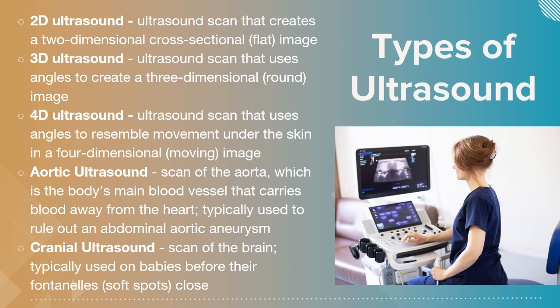These are the different types of ultrasounds that are available: 2D, 3D, and 4D, relating to the dimensions of what you see in your scan. A 2D ultrasound creates a two-dimensional cross-sectional flat image. 3D uses angles to create a round, three-dimensional image of internal organs or the baby. 4D ultrasounds use an angle resembling movement under the skin — more Doppler, blood flow, things like that.